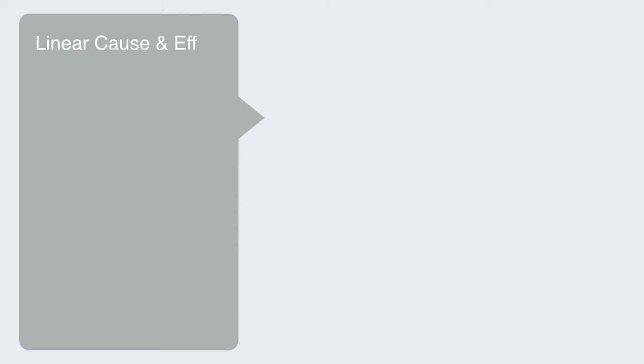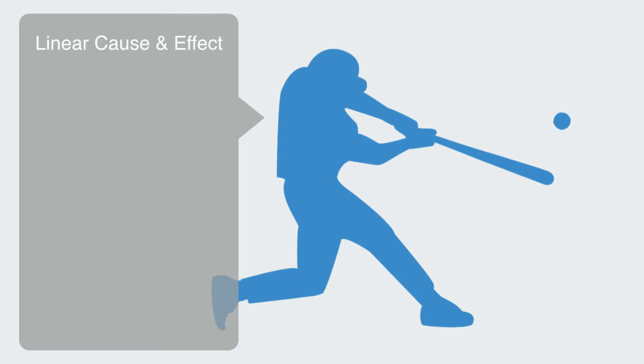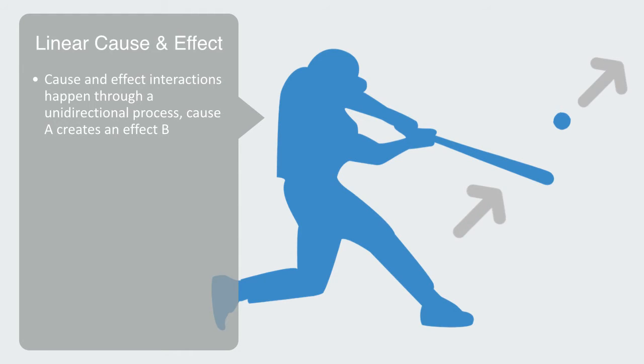In simple linear systems, cause and effect interactions happen through a unidirectional process. Cause A creates an effect B. We hit a ball with a bat and the ball moves off in the direction we hit it. We buy a product, we use it and throw it away.